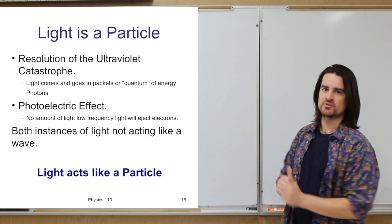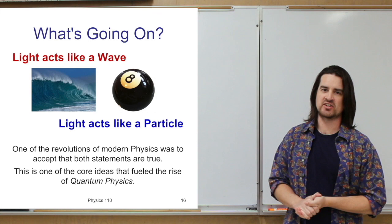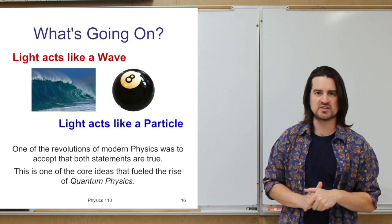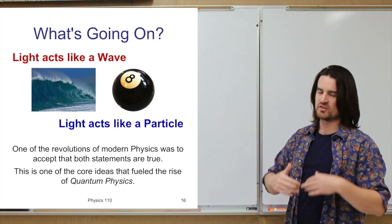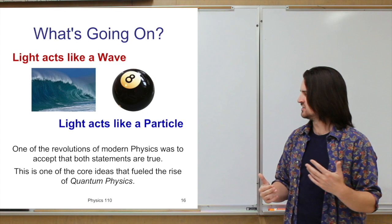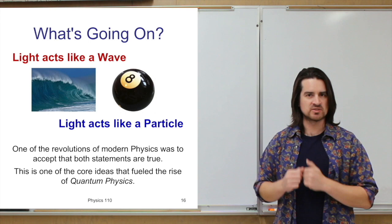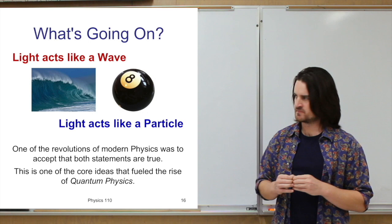So what's going on? In some places light acts like a wave, and in other places it acts like a particle — if you think of a particle as being like a ball, a billiard ball. As it turns out, one of the things that brought about what we call modern physics — our modern understanding of the world — is to essentially accept that both of these statements are true: light will act like a wave, and light will act like a particle. That acceptance is one of the core principles of quantum mechanics, or quantum physics.